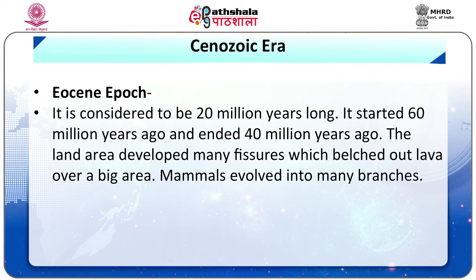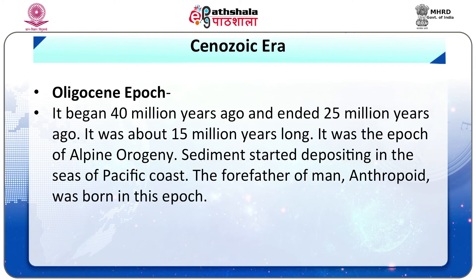The Eocene epoch is considered to be 20 million years long. It started 60 million years ago and ended 40 million years ago. The land area developed many fissures which bledged out lava over a big area. Mammals evolved into many branches. During this epoch, plants bearing fruits and grains developed on a large scale.